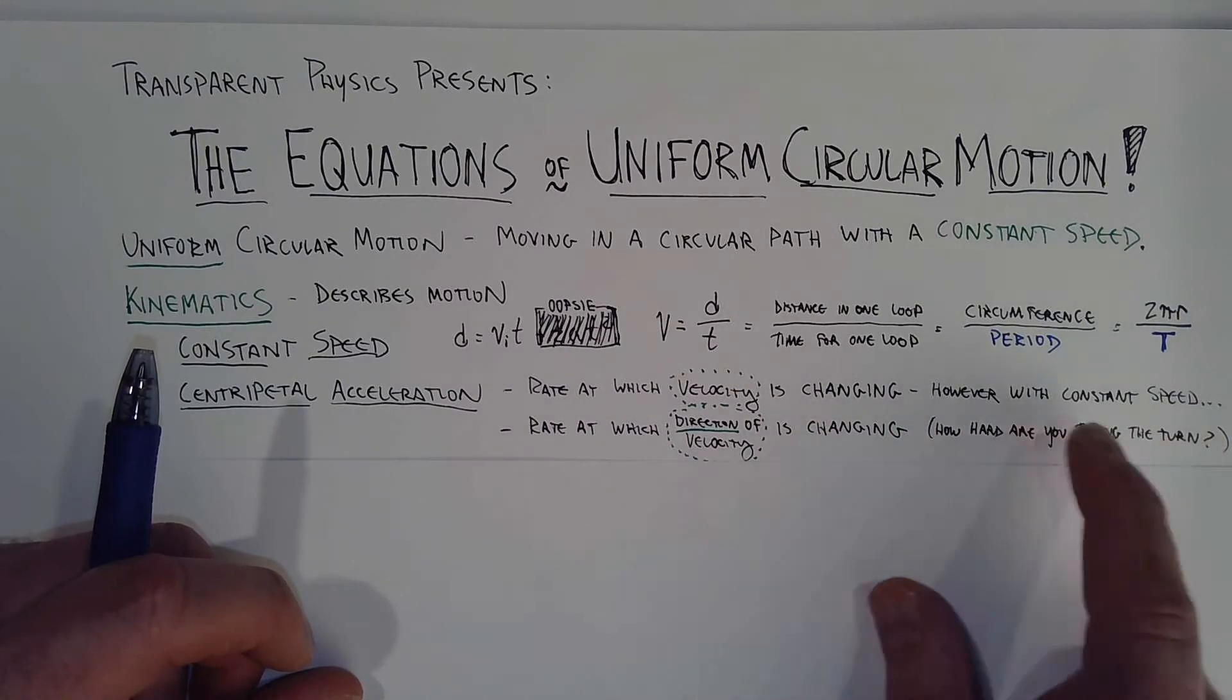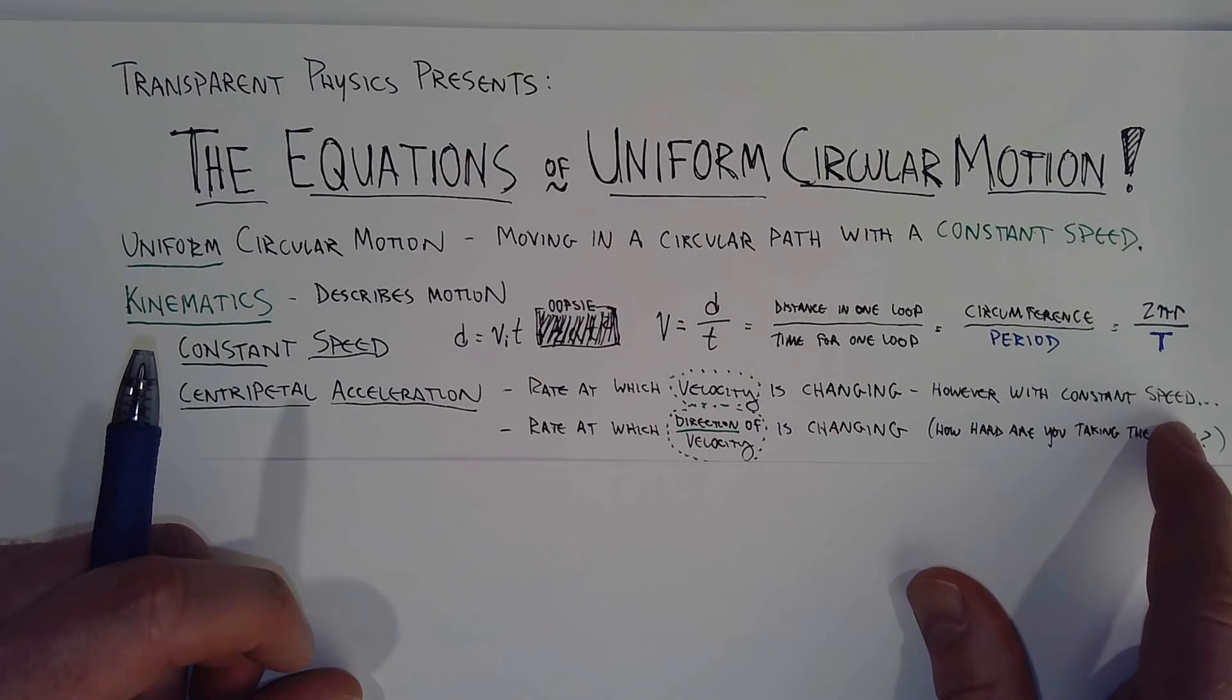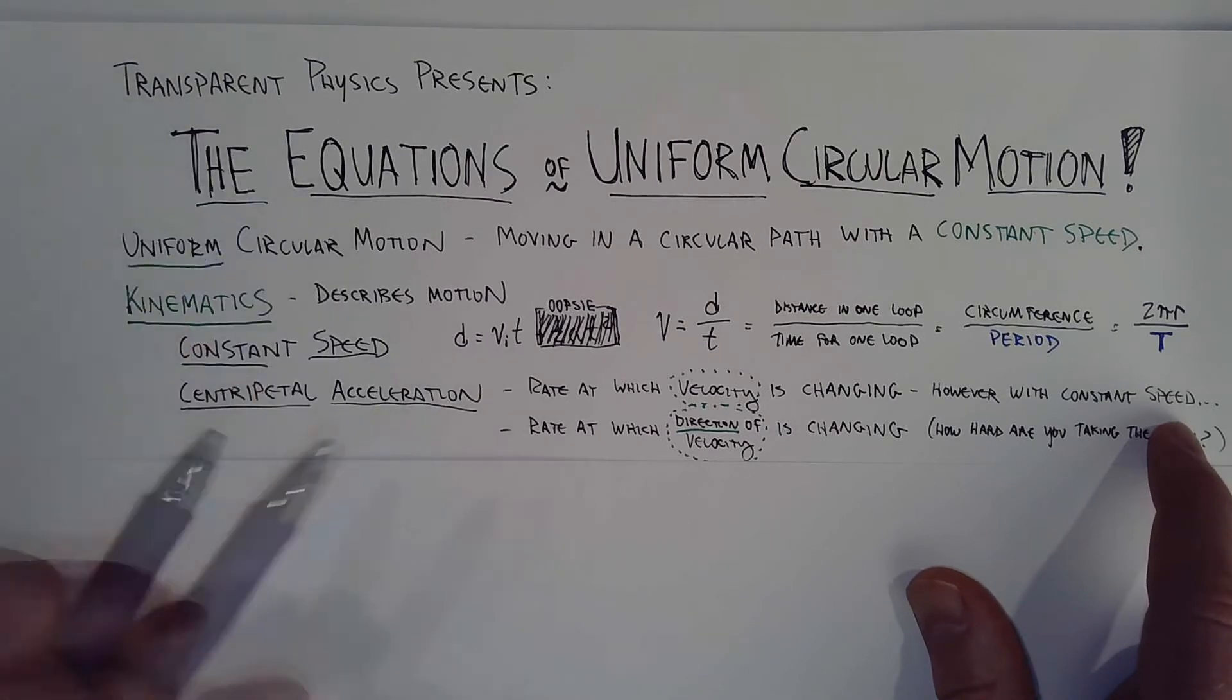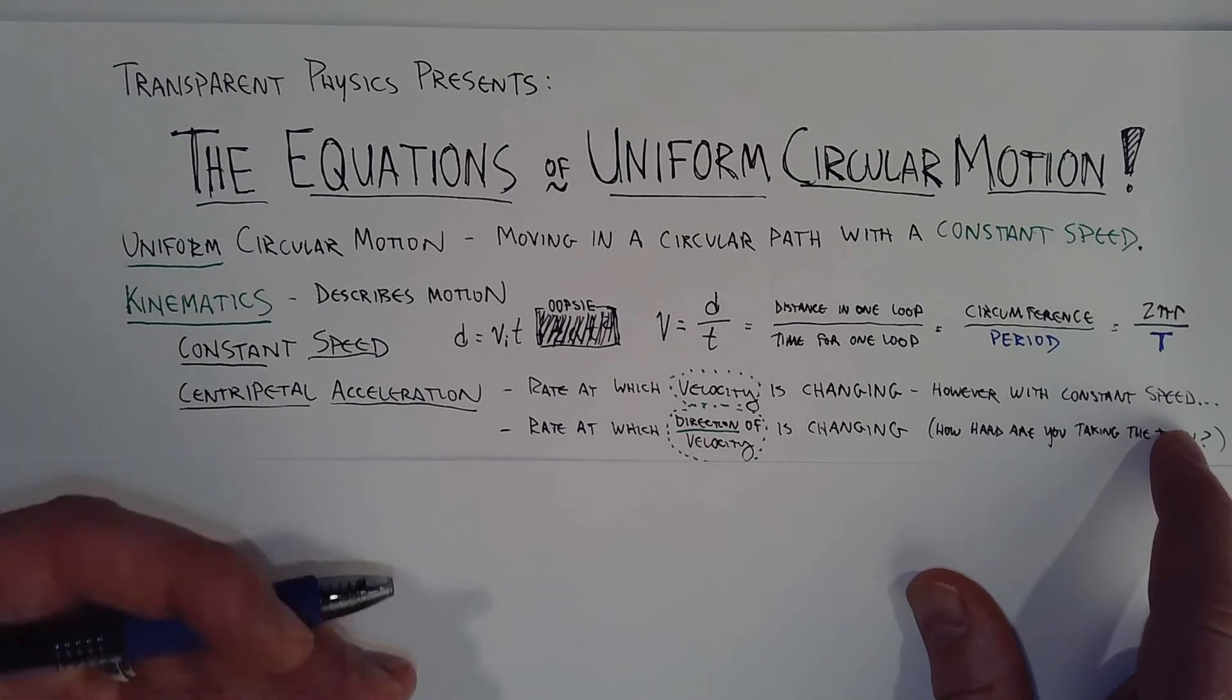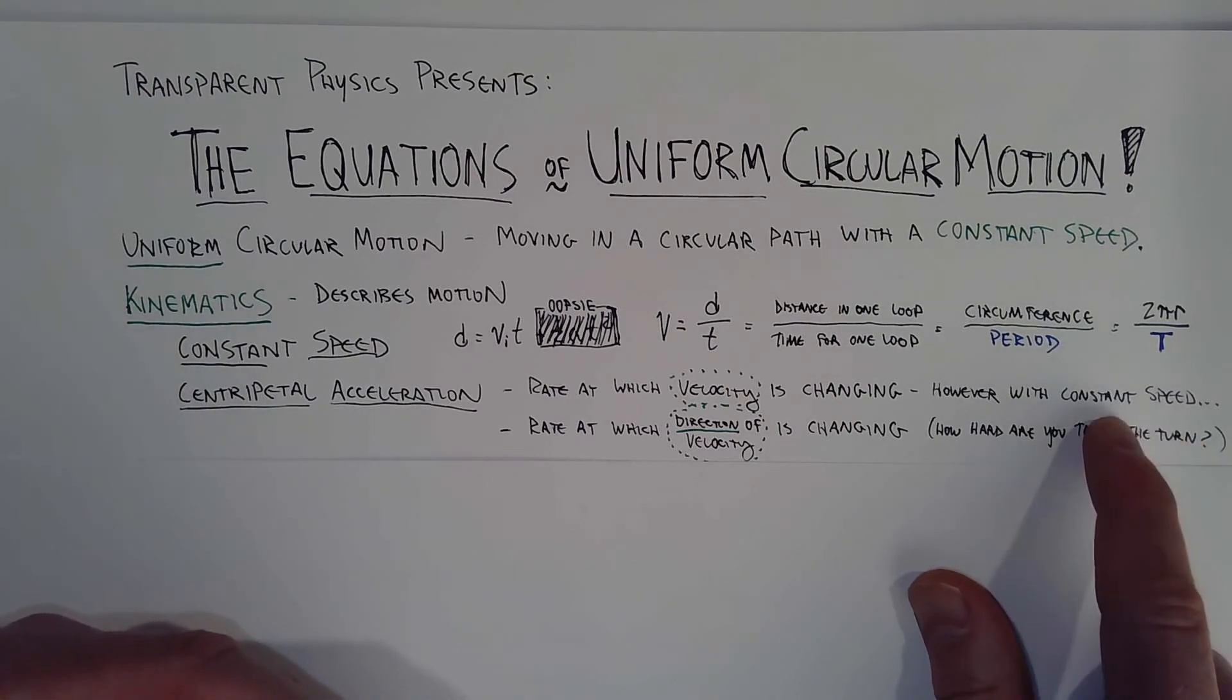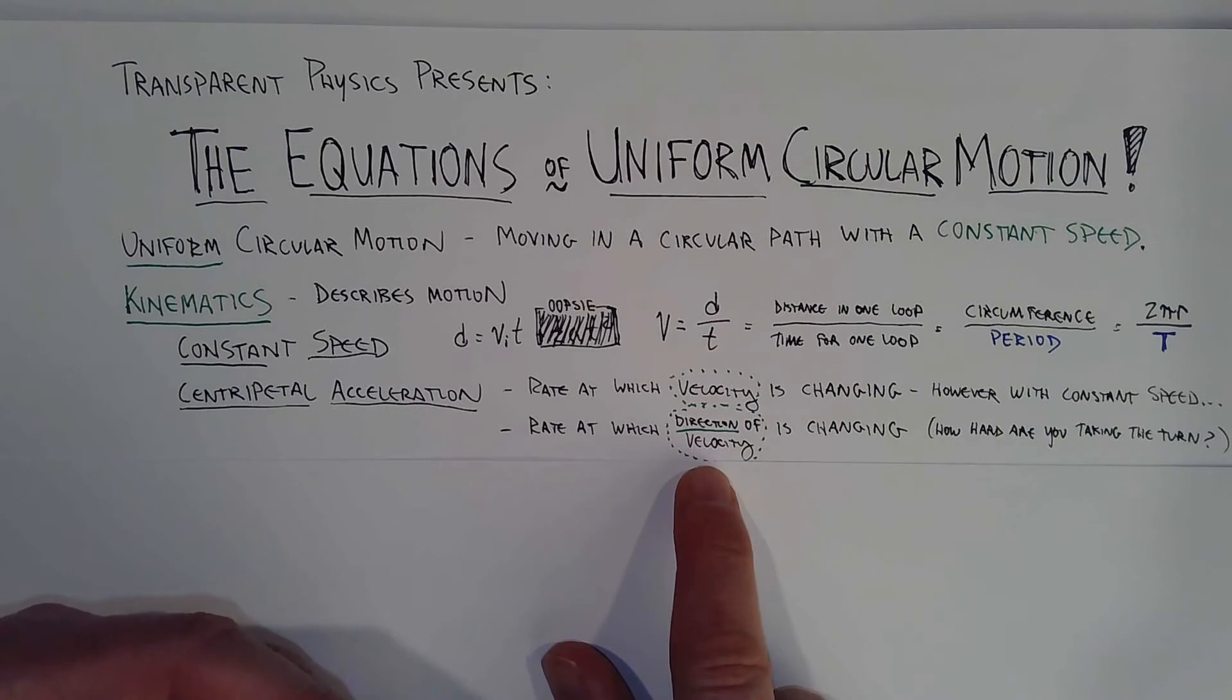That said, if we assume speed is constant, which we are arguing because it's uniform circular motion, then velocity is speed and direction. And if we don't allow the speed to change, then the only thing left to change is the direction of the velocity.